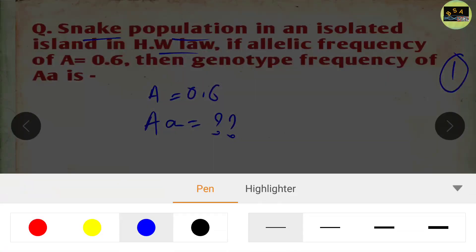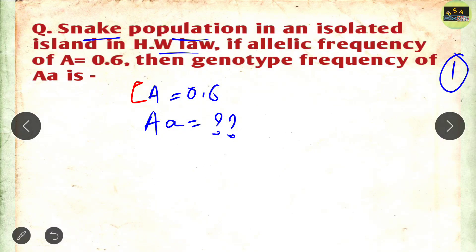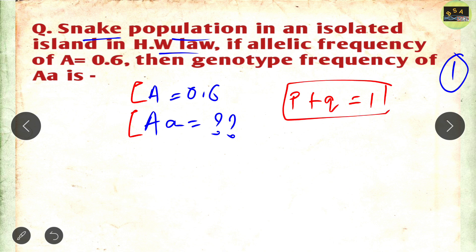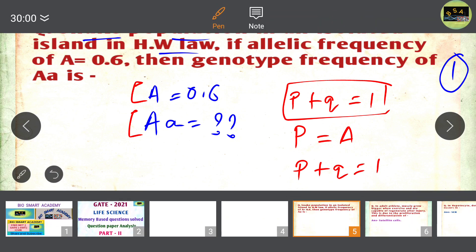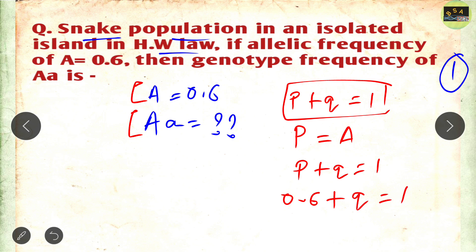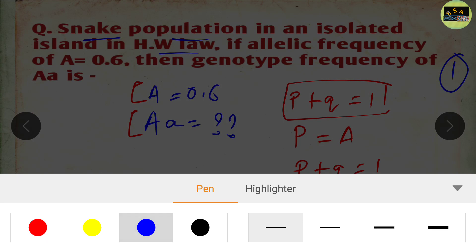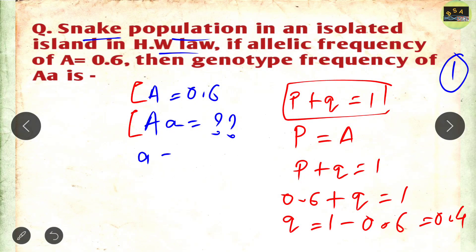In this question, capital A (the homozygous dominant frequency) is given, and we have to calculate the heterozygous frequency. We know the formula p + q = 1. If p = capital A = 0.6, then q = 1 − 0.6 = 0.4. So the small a value is 0.4.